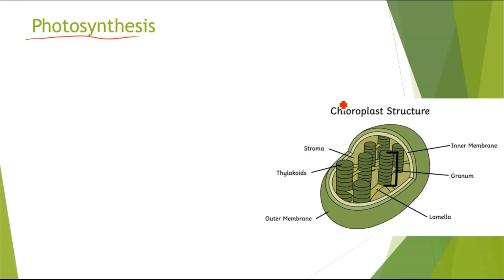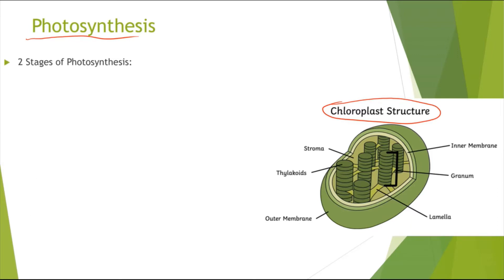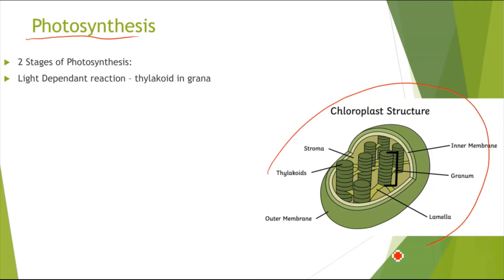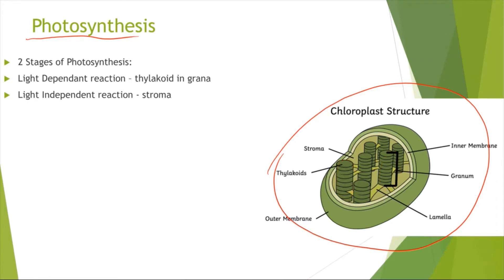Photosynthesis happens in the chloroplast — the organelle where the photosynthesis reaction takes place. There are two stages you are required to know. The first stage is the light-dependent reaction, which happens in the thylakoid in the grana. We have these thylakoid discs, and a whole stack of these discs is called a grana. The light-independent stage happens in the stroma, which is the base and matrix surrounding the thylakoid membranes.